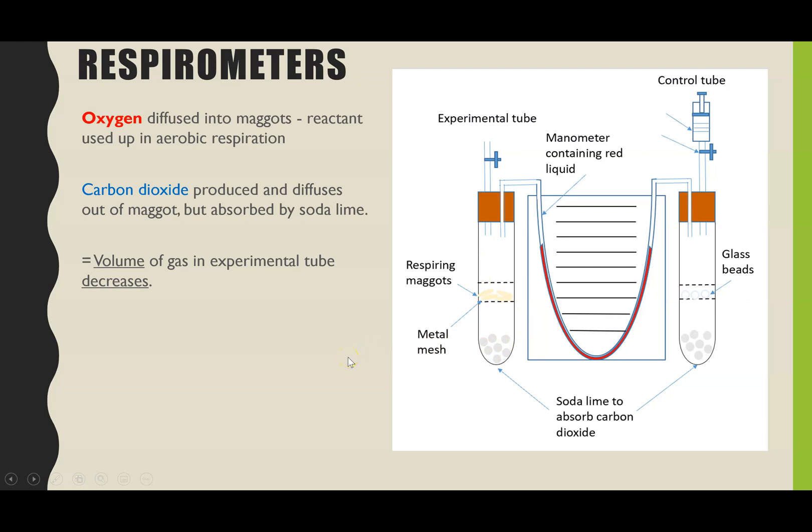So if the volume of gas decreases that will mean the pressure will drop inside of our experimental tube. Now that won't be happening in the control tube because the glass beads aren't taking in any oxygen. So comparatively the control tube will have a higher pressure compared to the experimental tube and because the pressure is comparatively high in the control tube that will then force the air around and the liquid inside of the manometer tube and therefore the liquid will start to move towards the experimental tube.